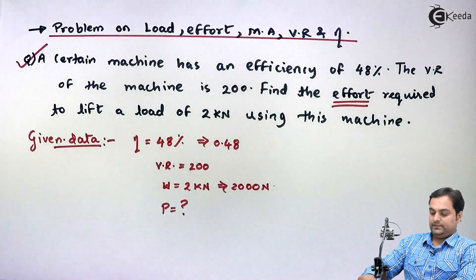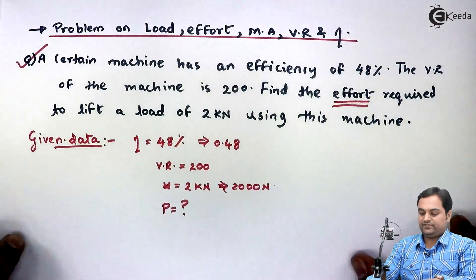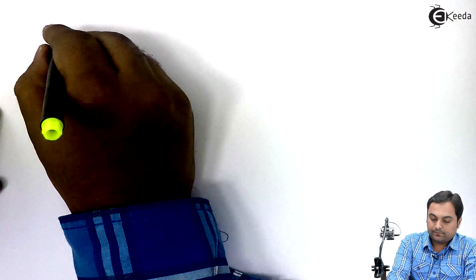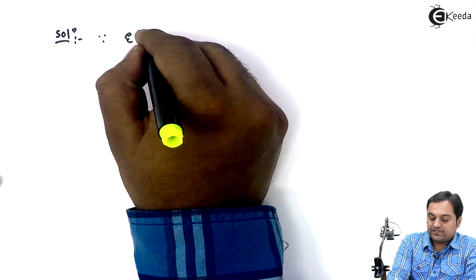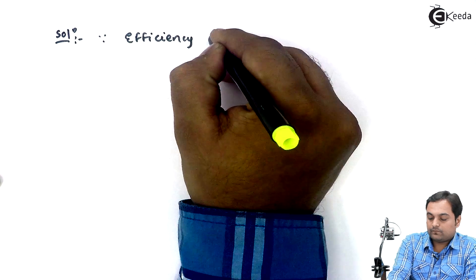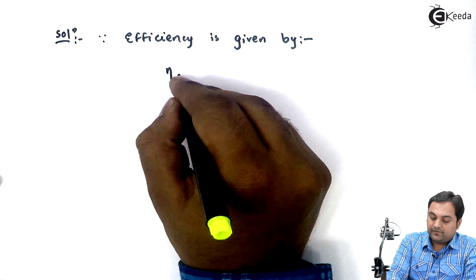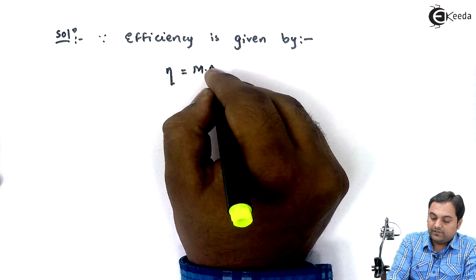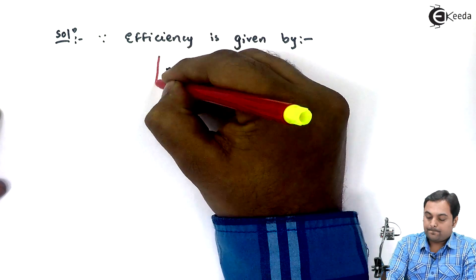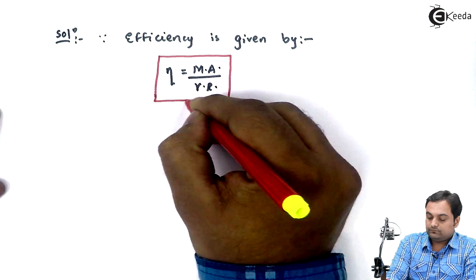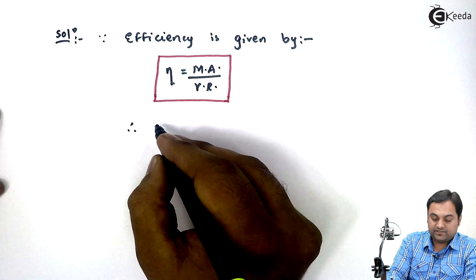Let us try to get the solution. Since they have given efficiency, we will start from the efficiency first. Efficiency is given by the formula: efficiency equals mechanical advantage upon velocity ratio. Therefore, efficiency equals 0.48 equals MA upon 200.